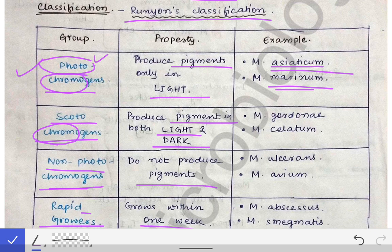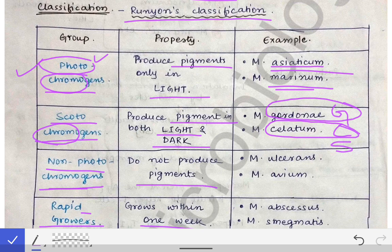For scotochromogens, remember GCS — the Glasgow Coma Scale. G stands for M. gordonae, C stands for M. scrofulaceum, and S stands for scotochromogen. So GCS gives you the examples of the scotochromogens: gordonae and scrofulaceum.